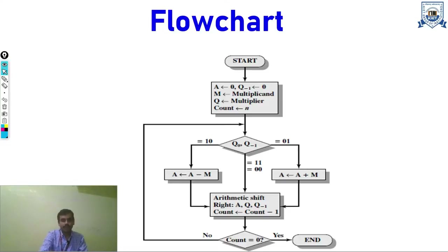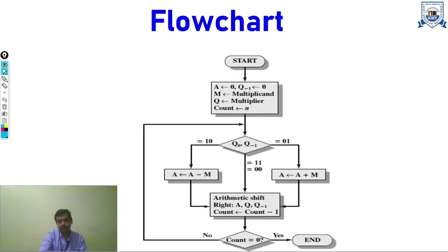In the flowchart we have five things. First is the accumulator, which has the same number of bits as the multiplicand — generally the higher magnitude number. Initially the accumulator is set to zero. Q-minus-one is the shifted LSB of the multiplier, initially assigned to zero. M is the register storing the multiplicand bits. Q stores the multiplier, and N is the number of bits in the multiplicand.